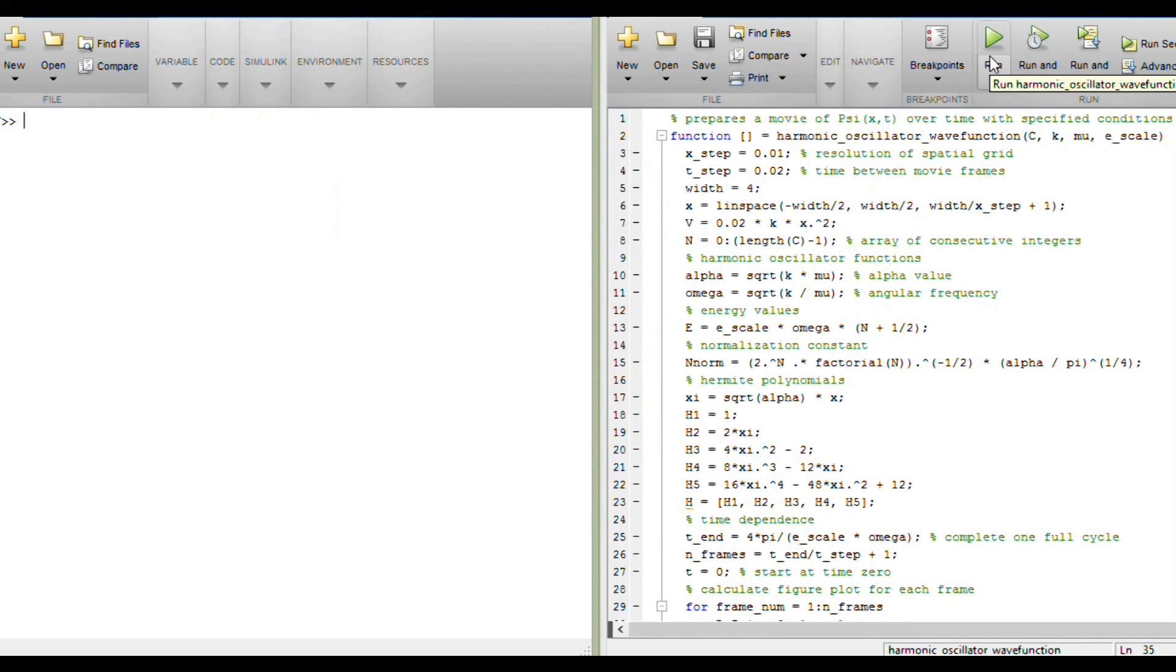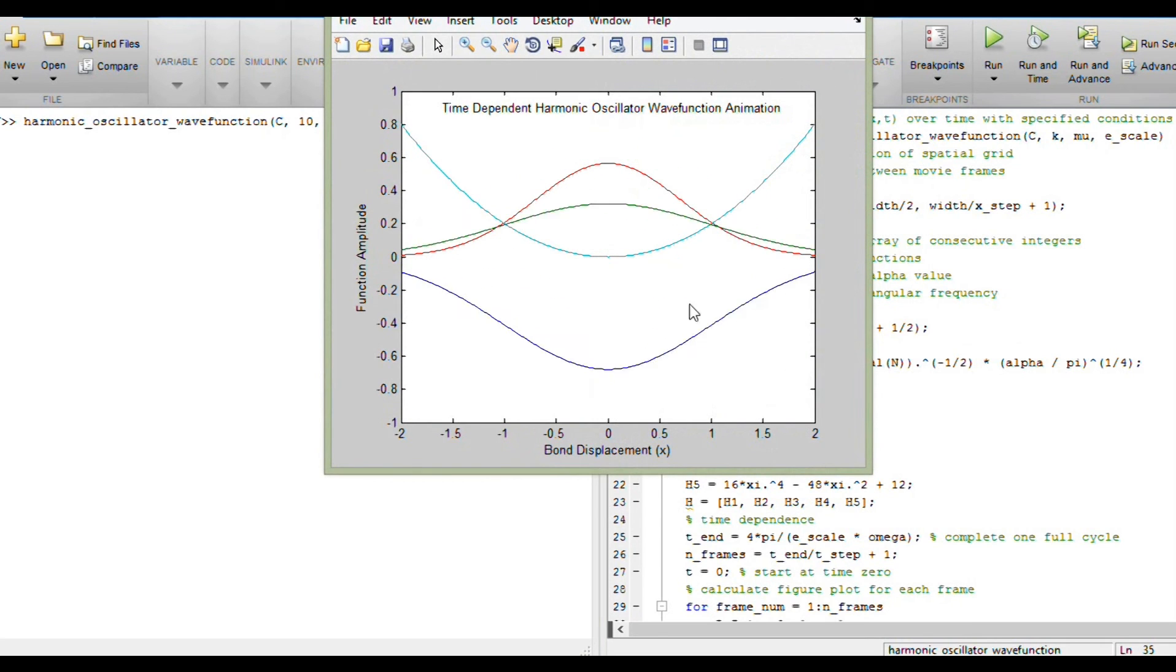We can also look, if we change the mass, what happens? If we make the particle lighter, give it a smaller reduced mass, notice the potential is the same now, but the particle being lighter is much more spread out because the frequency of its oscillation is now higher, so it has higher energy, and it's getting pushed to a higher energy because of that smaller reduced mass.